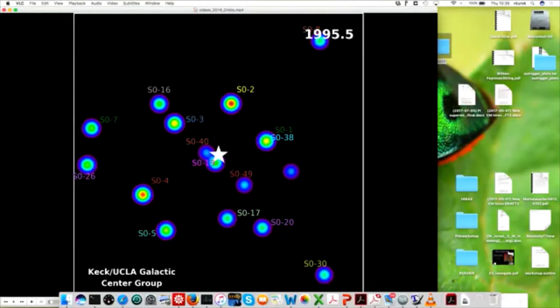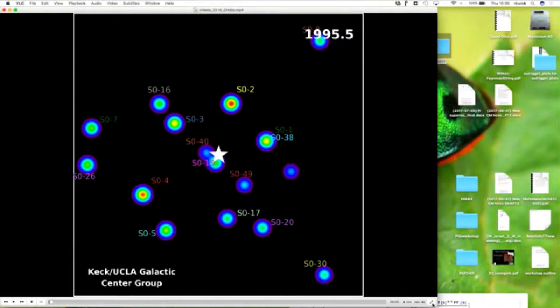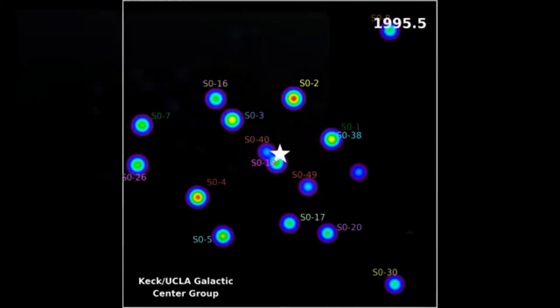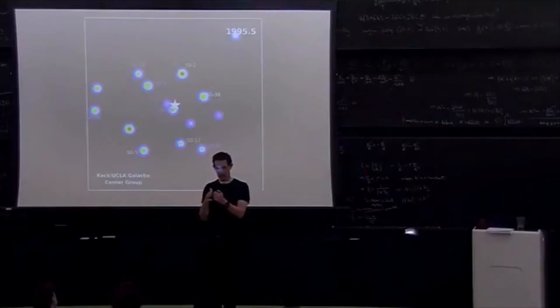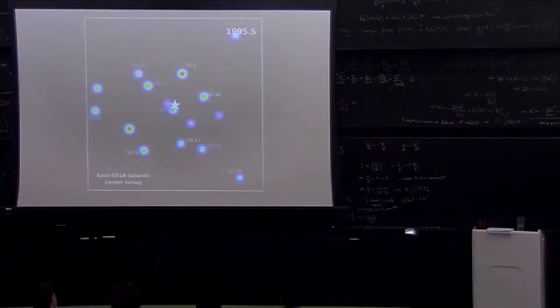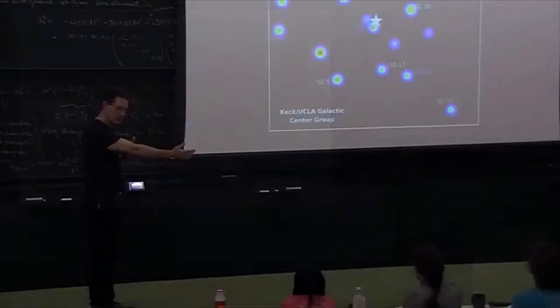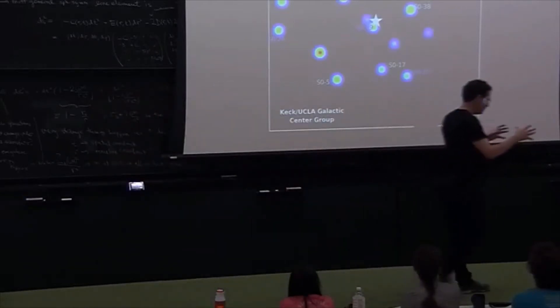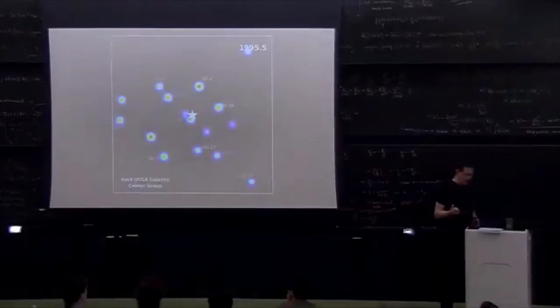So what are we looking at? I think we can do full screen. Okay, so this is a picture of the center of the galaxy. We live in the Milky Way, roughly 25,000 light years from the center of the Milky Way. The center of the Milky Way has lots of stars in its neighborhood.